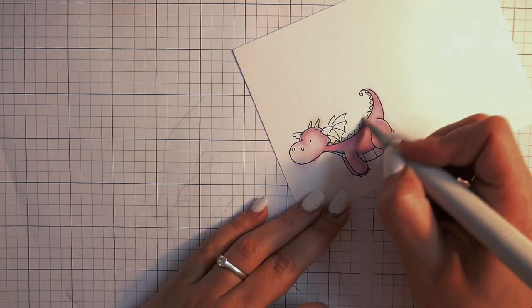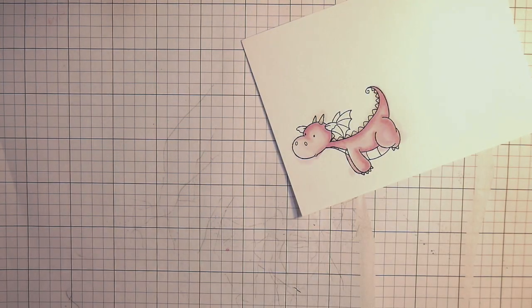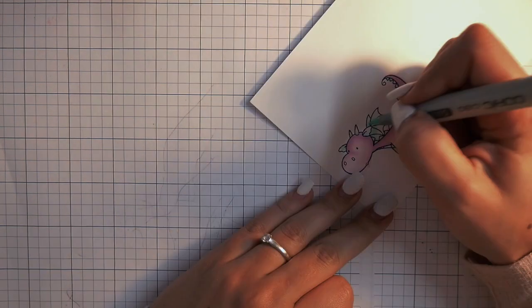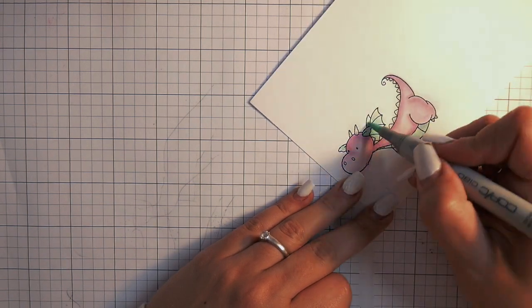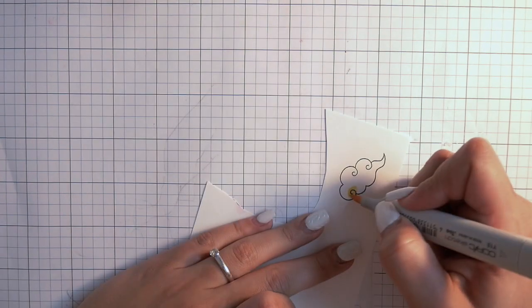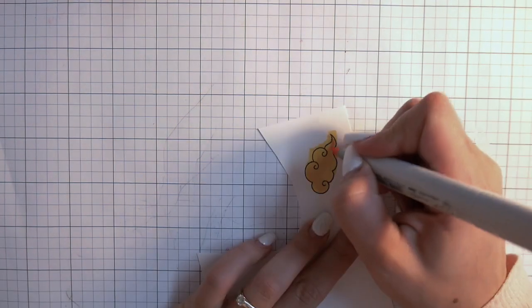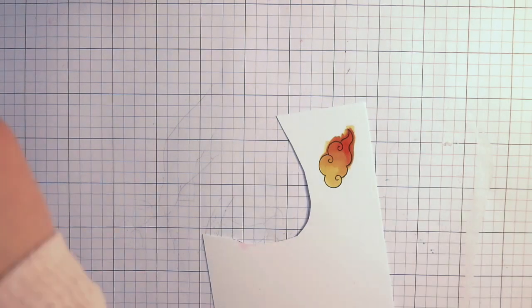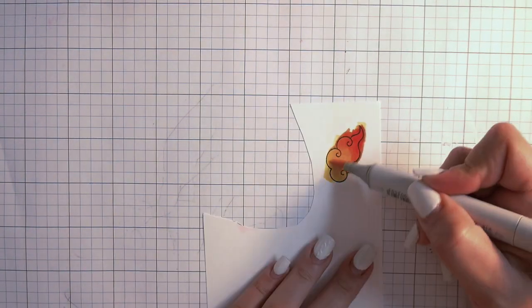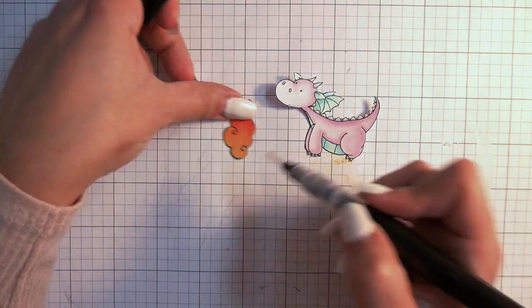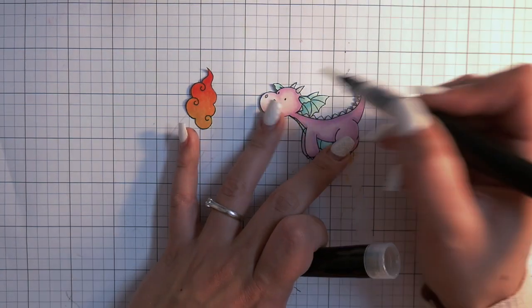The colors I'm using here for my dragon are RV63, RV52, RV00, and G0000, G000, and I think it's B23 for this. I can't remember what I used, but you use what you have for your little dragon and the fire.